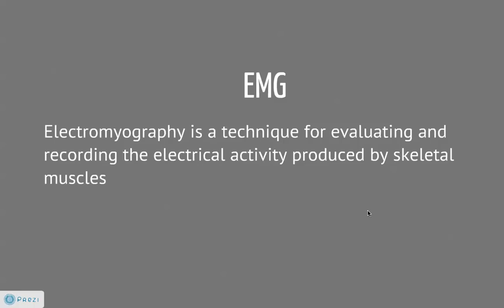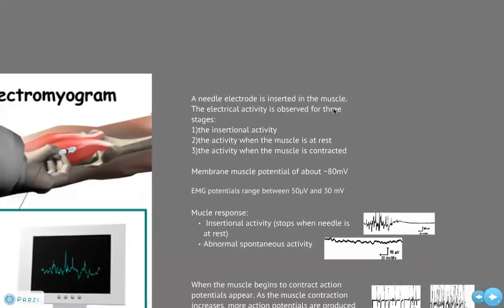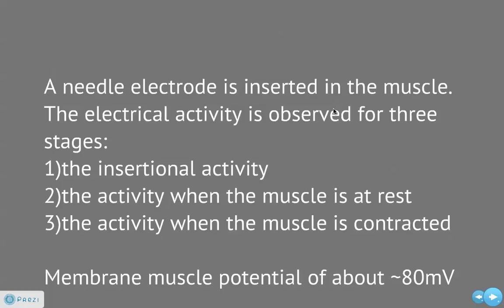Here we have a picture of an electromyogram being performed on a patient. A needle electrode is inserted through the skin into the muscle, and the electrical activity for three stages is then observed. First, we measure the insertional activity — that is when the needle is inserted and the muscle had been previously at rest. Then the electrical activity when the muscle is at rest is studied as the needle has stopped moving. Finally, the measurement of a contracted muscle is taken when the patient is asked to contract the muscle smoothly.